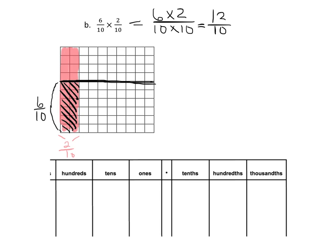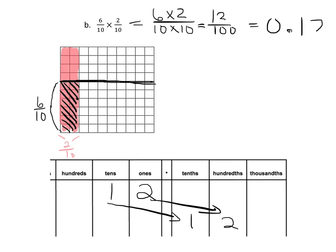So that's 12 hundredths. And 12 hundredths — when we multiply by hundredths, that's going to move each of these digits two places to the right. So that's equal to 0.12.